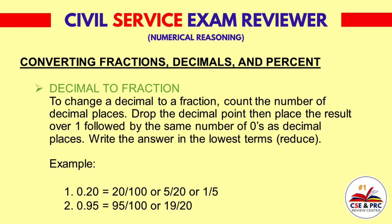Decimal to fraction. To change a decimal to a fraction, count the number of decimal places, drop the decimal point, then place the result over 1 followed by the same number of zeros as decimal places. Write the answer in the lowest terms — reduce.